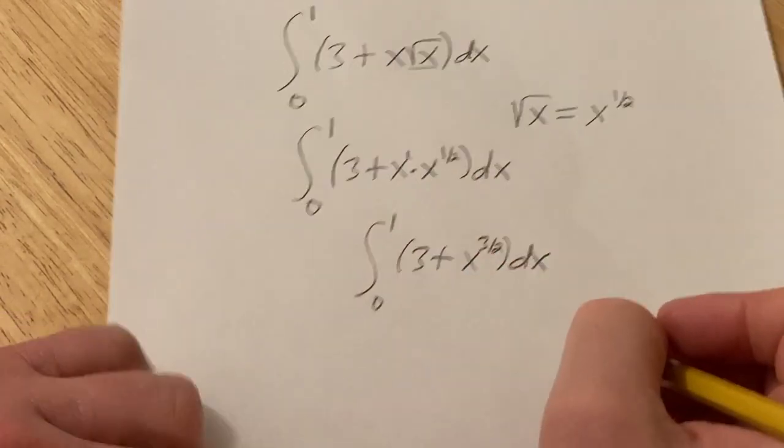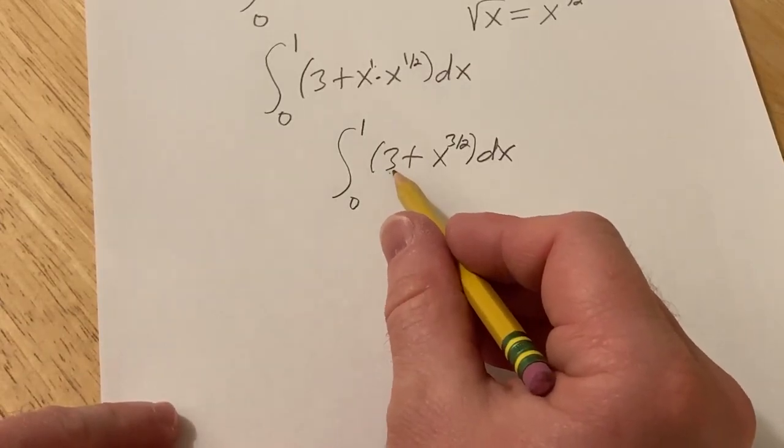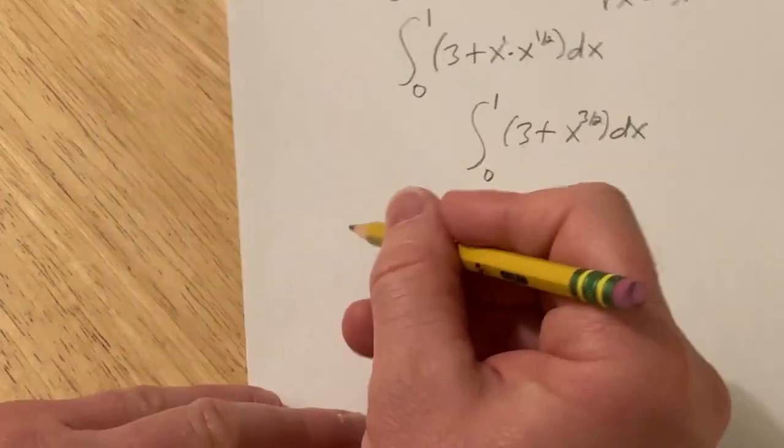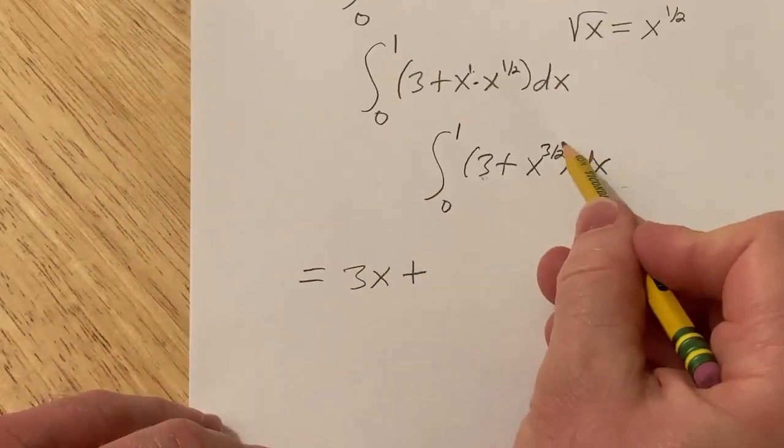When you're integrating a constant, you basically just put an x next to it because it's with respect to x. So this is 3x plus, and then here we're going to add 1 to the exponent.